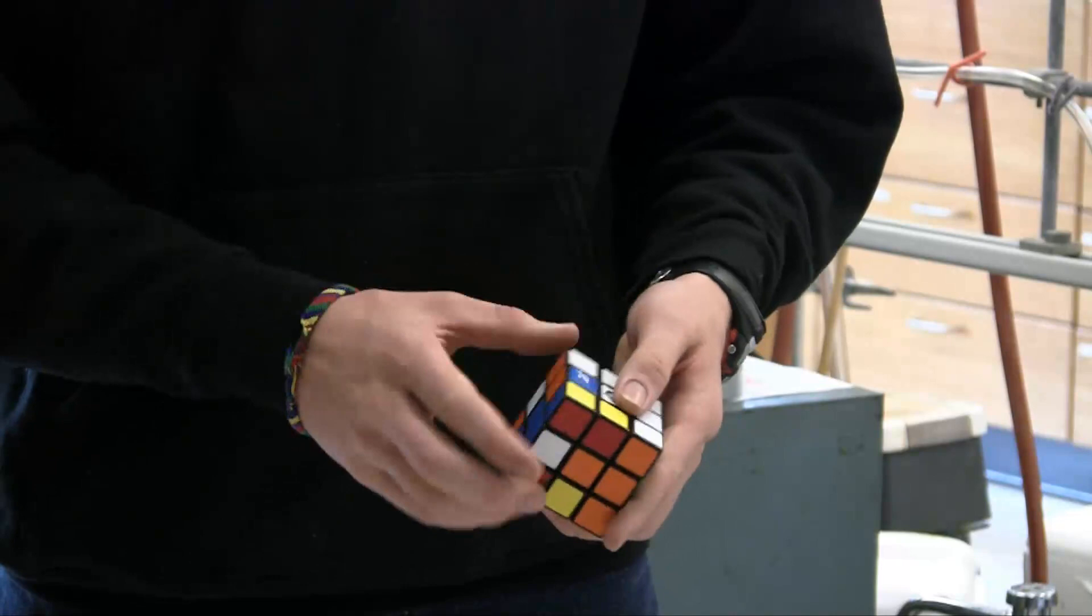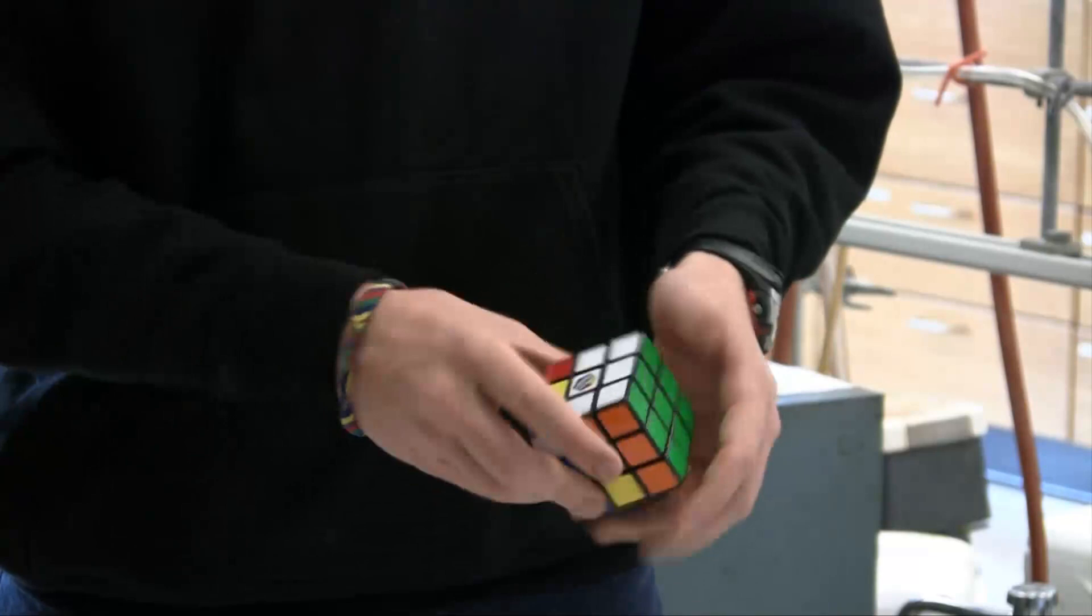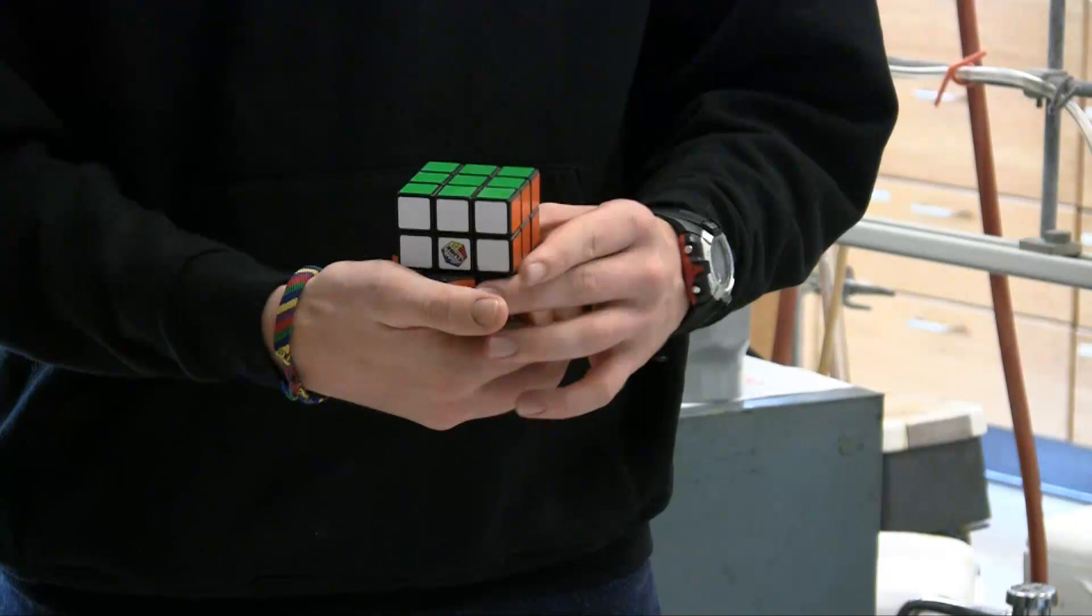Now I'm doing an orange and white one. These two colors are going to go in this position. Then yellow and red. Then the last one is yellow and orange. And now you have two of your layers solved.